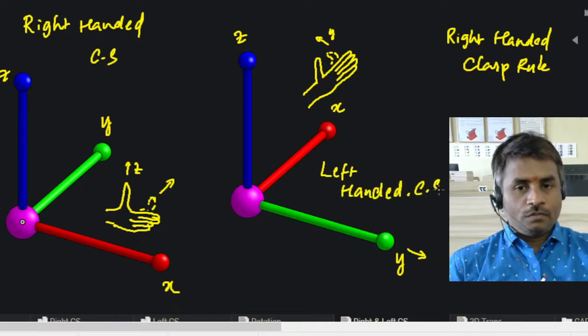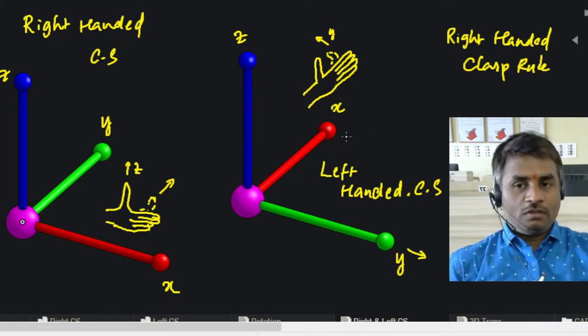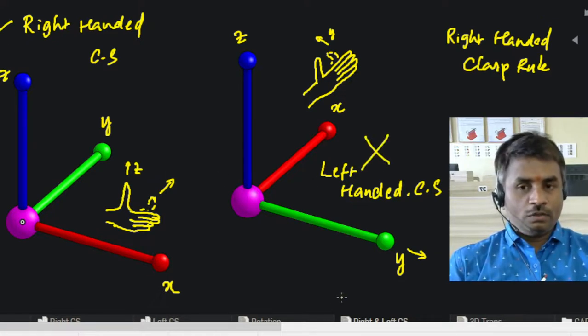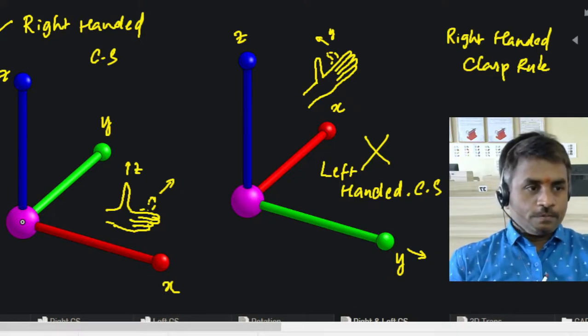Wherever we are using coordinate systems in robotics or CAD CAM, we will always use the right-handed coordinate system and never use the left-handed coordinate system. That's it for this video, thank you very much.